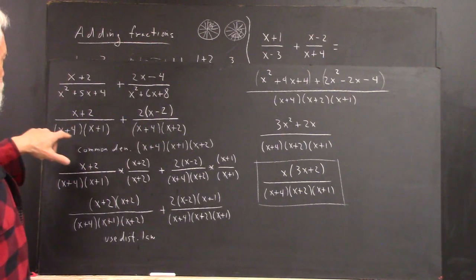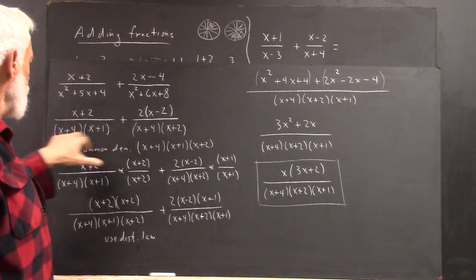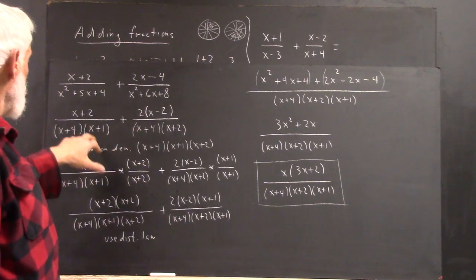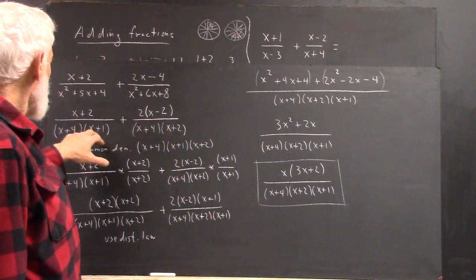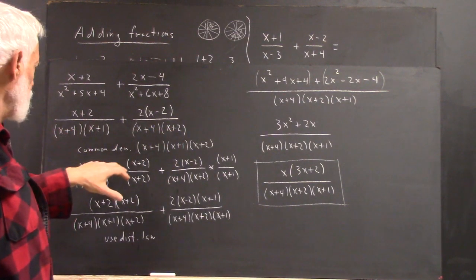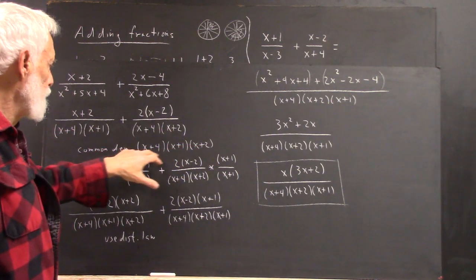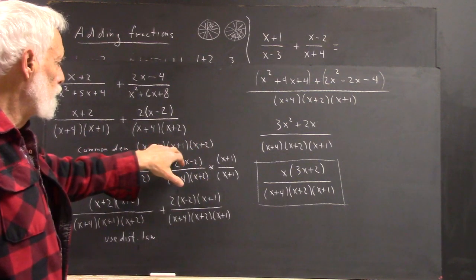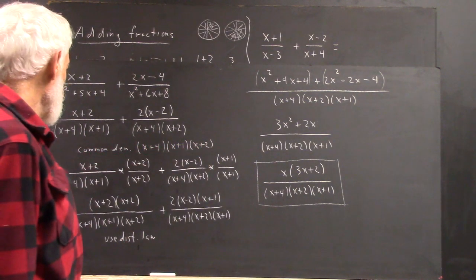Okay, in any case, here are our denominators. Now we see x plus 4 is common to both, but x plus 1 and x plus 2 - x plus 1 doesn't appear over here, x plus 2 doesn't appear over here. It follows that our common denominator is x plus 4 times x plus 1 times x plus 2.